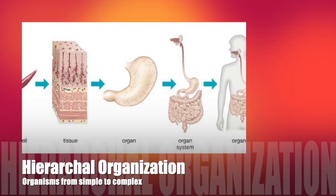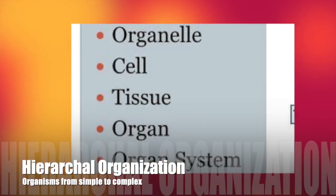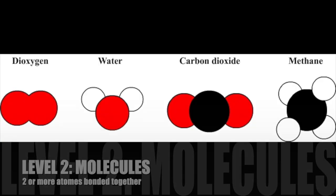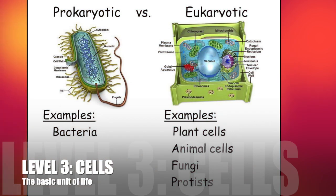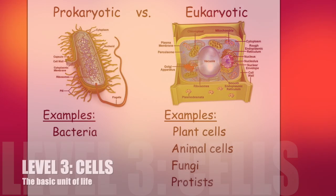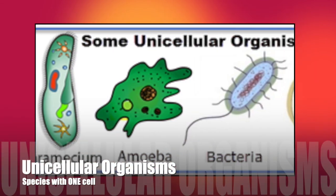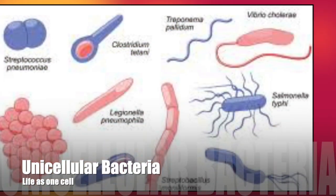Now we're going to review the levels of organization in biology. The first two levels are atoms and molecules. Atoms are a basic chemical element and molecules are two or more atoms. These two levels are not considered living. It's when we get to level three that cells come in. Based on the modern cell theory, cells are the basic unit of life. If it has just one cell, it's considered living. There are actually many different species on earth that are made of just one cell — many of these are bacteria.